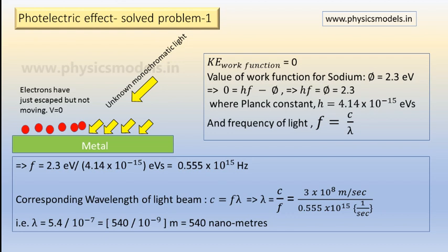So plug in the value of the speed of light 3 times 10 to the power 8 meters per second. In the denominator there will be the frequency that we just found. The unit is 1 by second. So second and second will cancel and you will get meters as the answer. Convert that answer into nanometers. So that will be 540 divided by 10 to the power minus 9 and that is 540 nanometers.